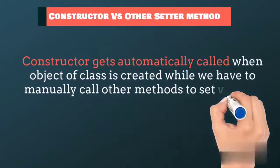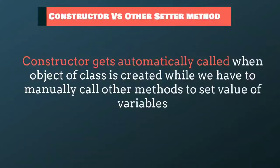We can also set the value of a variable with other methods but we have to manually call them. The advantage of constructor over other methods is that we don't need to call it. The constructor will automatically get invoked when the object of a class is created. So in this way, when a new object is created, the constructor will initialize the values of the variables.